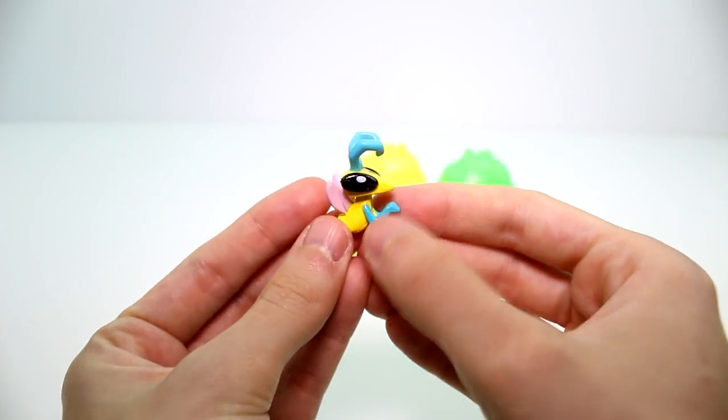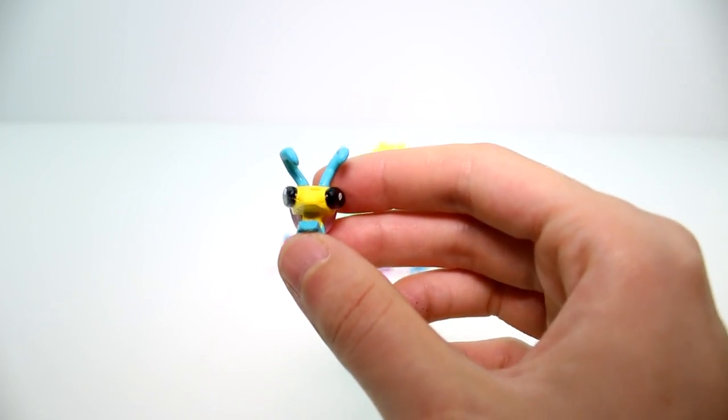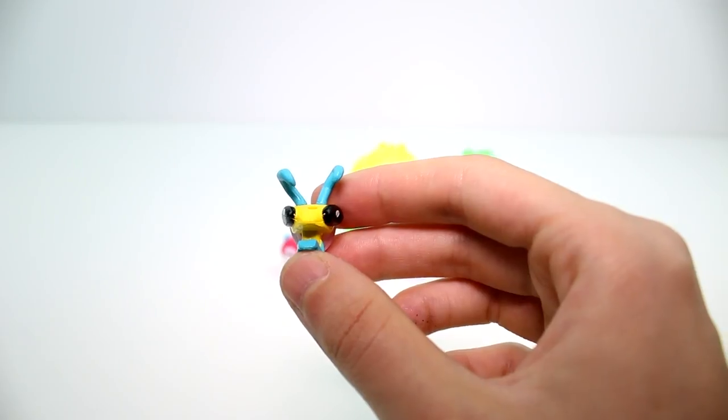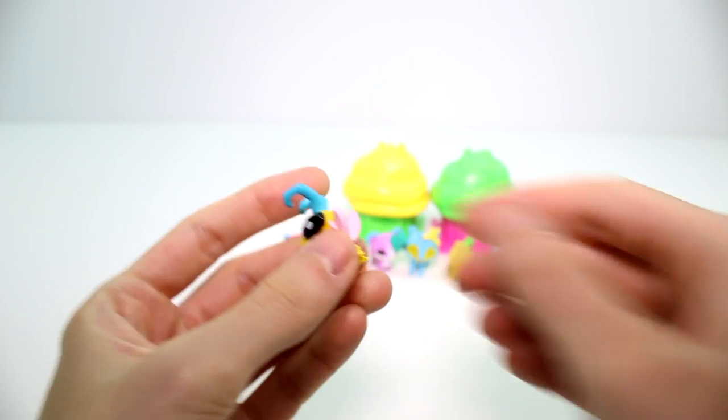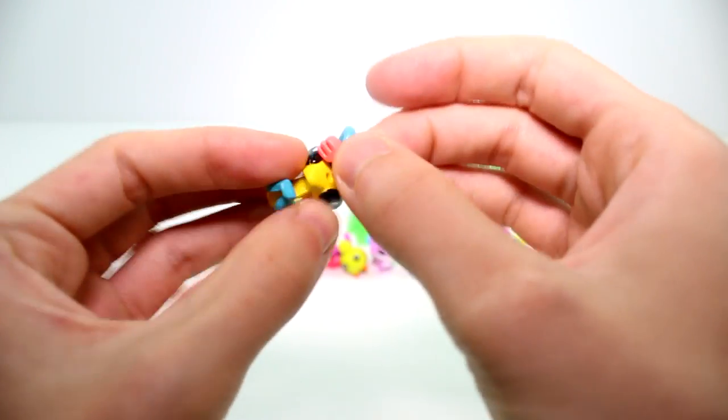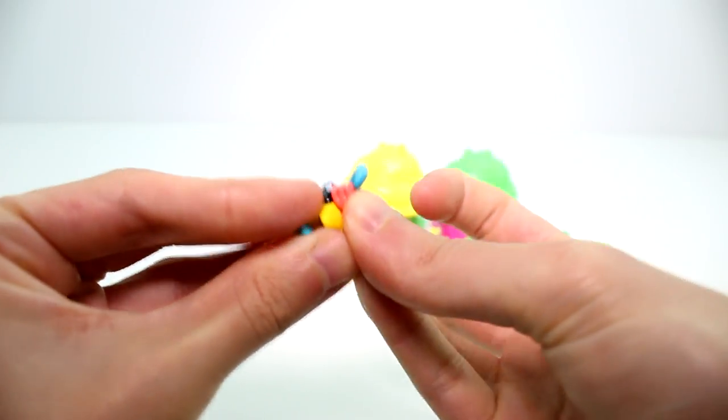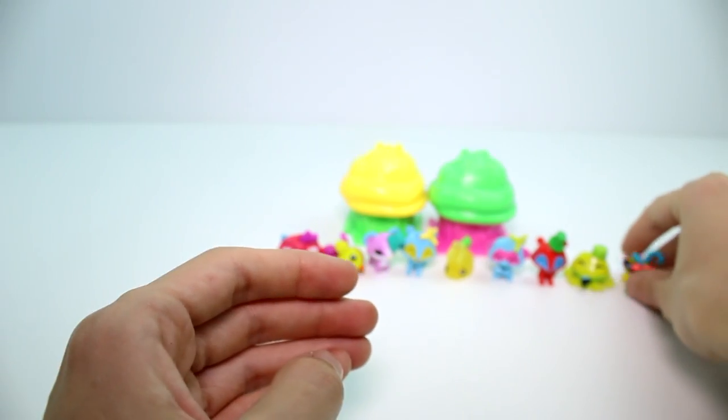And then we have a little praying mantis I think. I'm gonna look this one up on the checklist. Miss sprinkles. Okay, miss sprinkles. Hello friend, and then you can have this little gardening tool on your head for some reason. And that's fun.